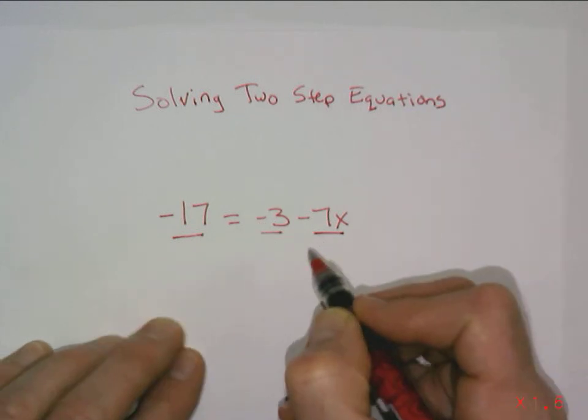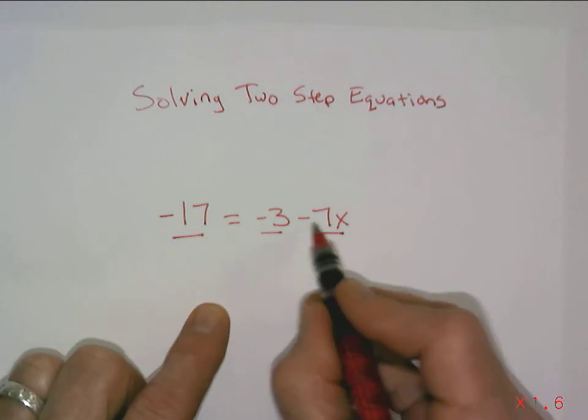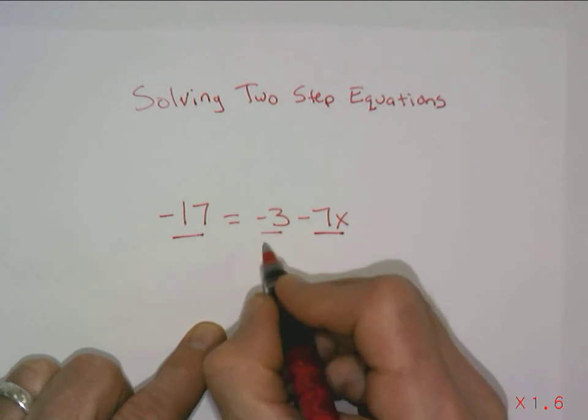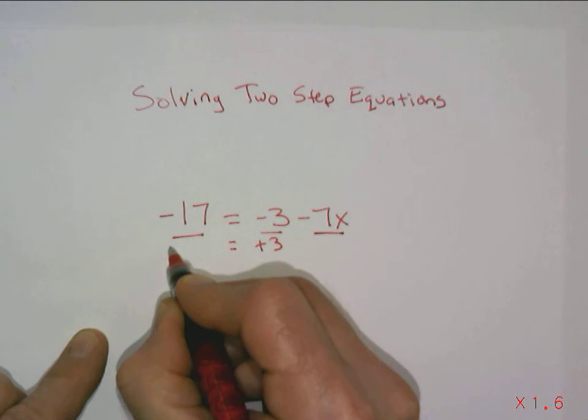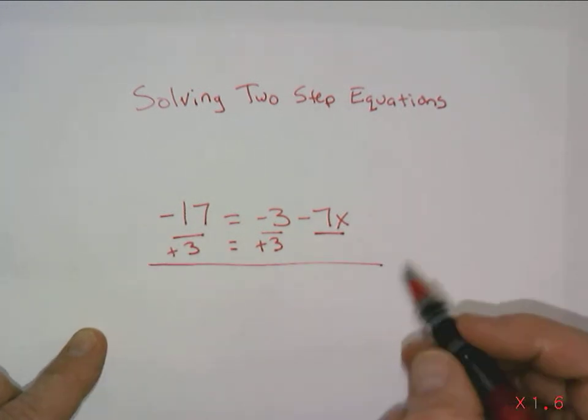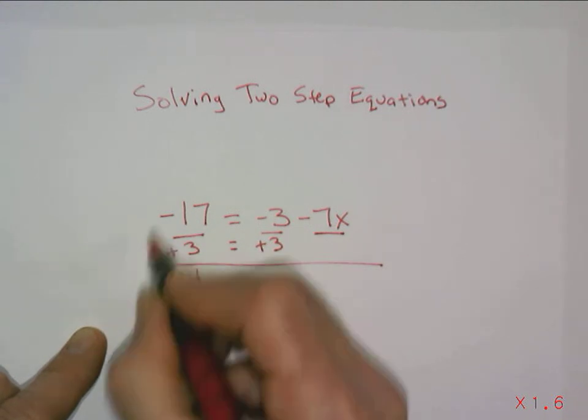So it's like minus 3. Negatives and minus, same thing. This is minus 7x or you can think of it as just a negative 7x. So since I have a positive 3 here, or negative 3 here, I'm going to add 3 to both sides. Positive 3 to both sides. And so then negative 17 and a positive 3 is negative 14. When I combine those.